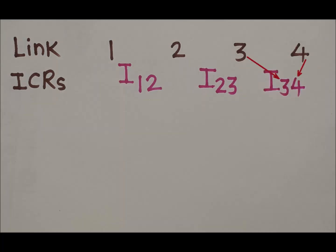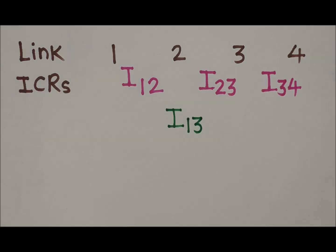We cannot write any more ICRs in this row. In the next row, between I12 and I23 we write ICR I13. How is I13 written? The first digit comes from the first digit of ICR I12 (which is 1), and the second digit comes from the second digit of ICR I23 (which is 3).